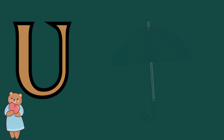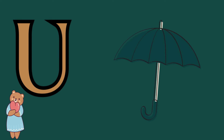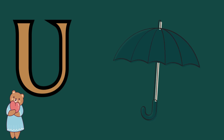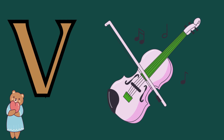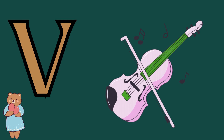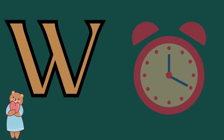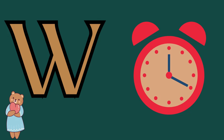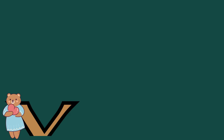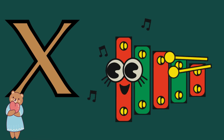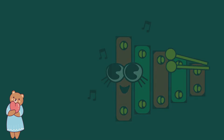U is for umbrella, u-u-umbrella. V is for violin, v-v-violin. W is for watch, w-w-watch. X is for xylophone, z-z-xylophone.